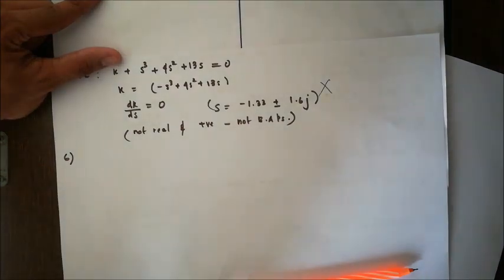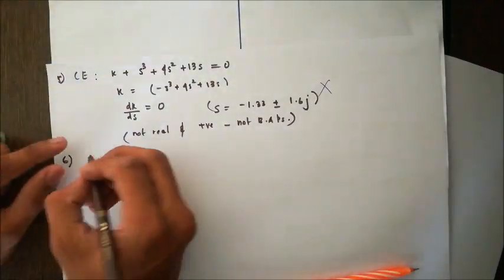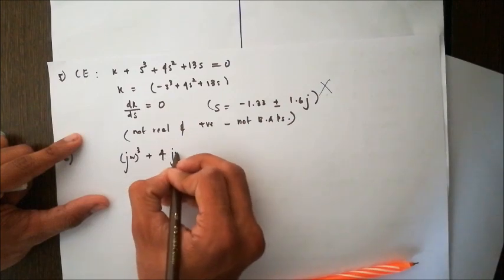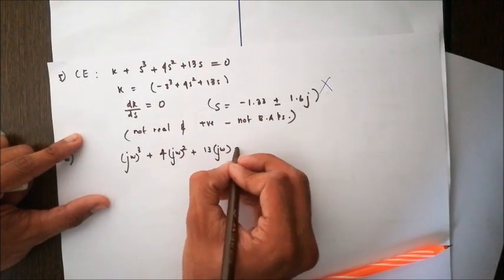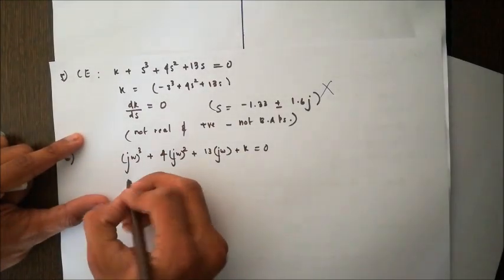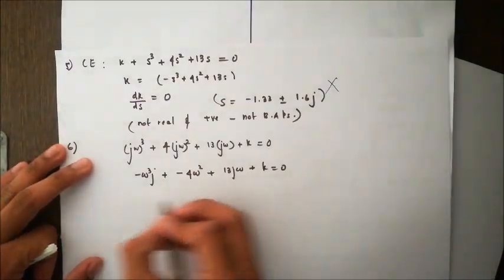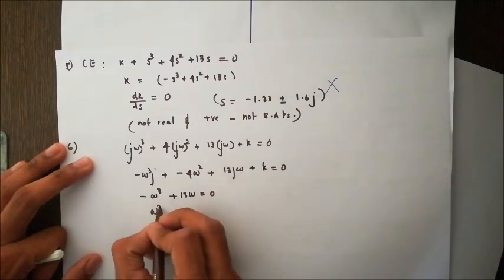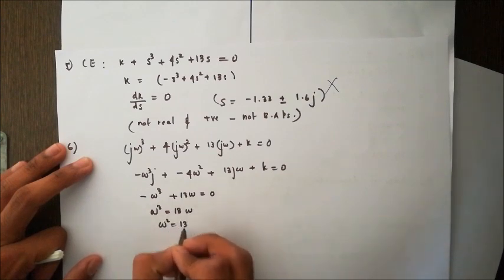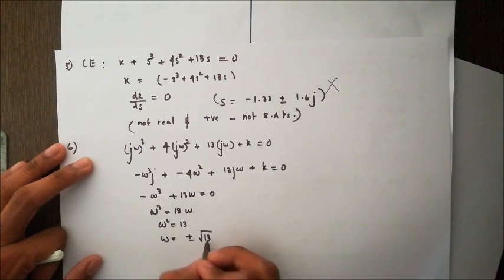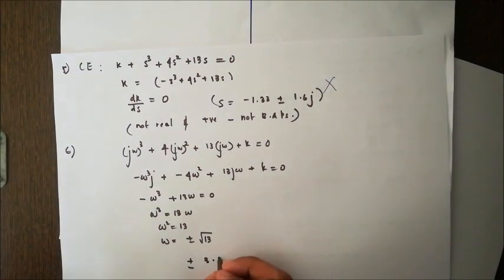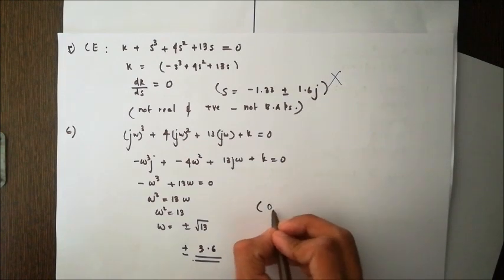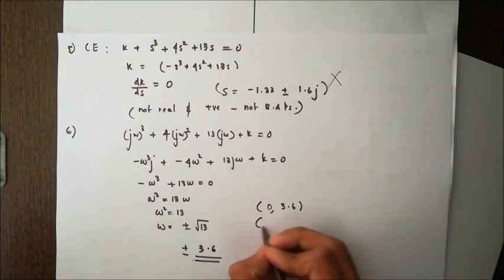Now let's find where it intersects the jω axis. We substitute jω in the equation: (jω)³ + 4(jω)² + 13jω + k = 0. When we simplify and equate the imaginary parts, -ω³ + 13ω = 0, giving ω² = 13, so ω = ± √13 = ± 3.6. The intersection points are (0, 3.6) and (0, -3.6).